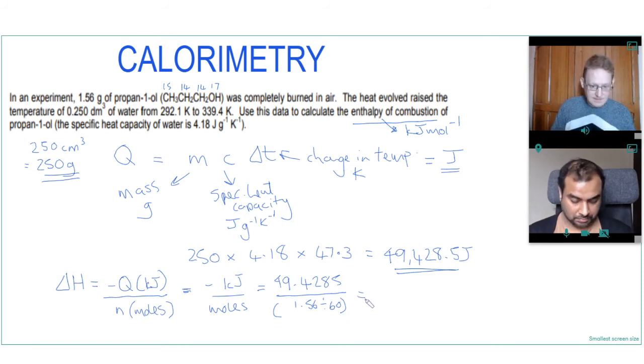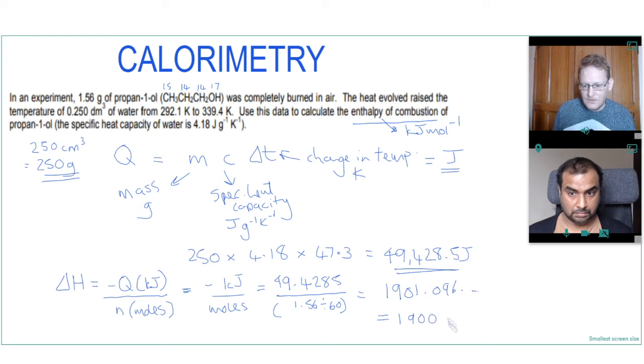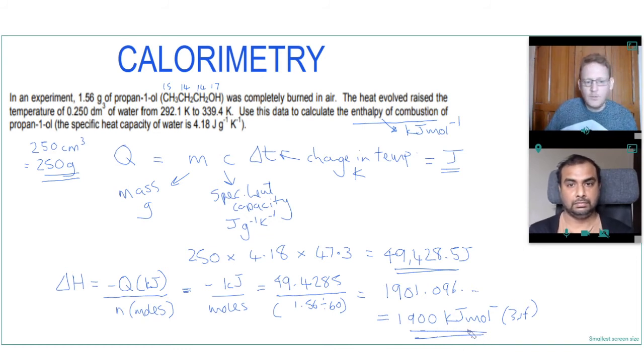And then if we put that in our calculator, 49.4285 divided by 1.56 divided by 60, we get 1901.096 which to three significant figures is 1900 kilojoules per mole, and that's the enthalpy of combustion of propan-1-ol.